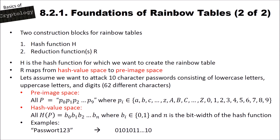Here is an example. We have the password 'Passwort123' — which is German for 'password' and 123 — and this is mapped to the hash value 0 1 0 1 0 1 1 and so on. So 'Passwort123' comes from our pre-image space and the resulting bit string is our hash value space.